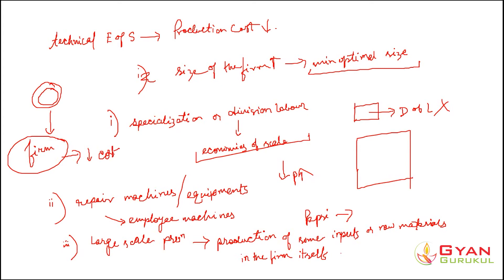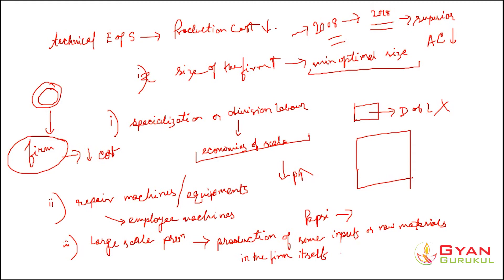The fourth reason is that in the long run, technology is going to upgrade. In the short run technology remains fixed, but in the long run technology enhances. For example, the technology used in mobile phone manufacturing in 2008 was outdated by 2018, replaced by more superior technology. In that case, the cost per unit — the average cost — falls because technology has improved. This technological change also leads to a fall in production cost.